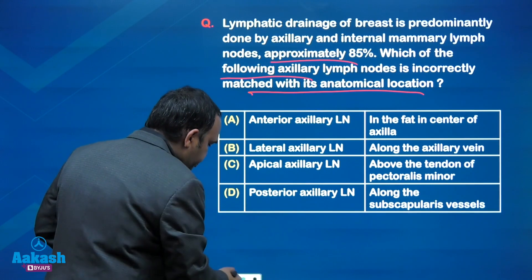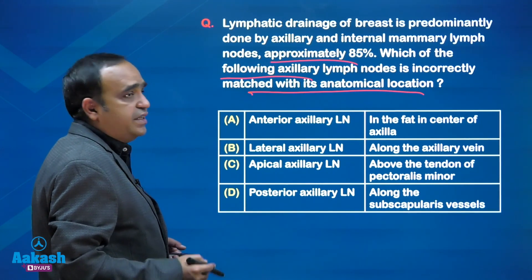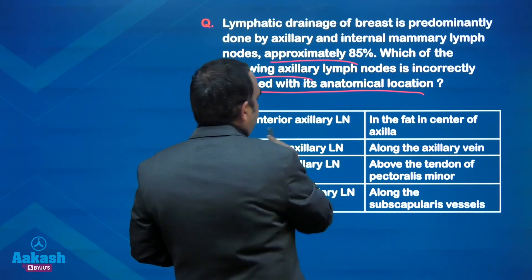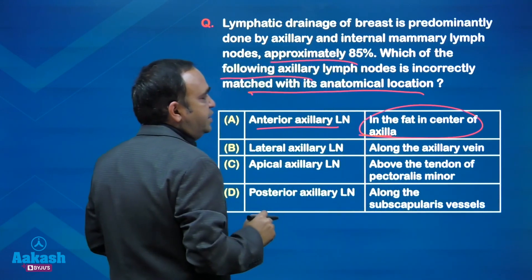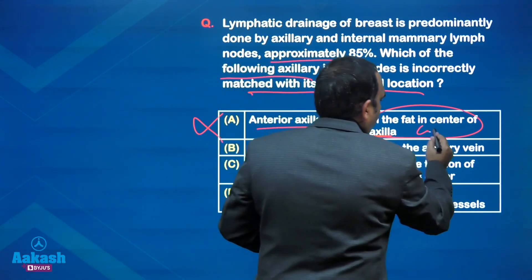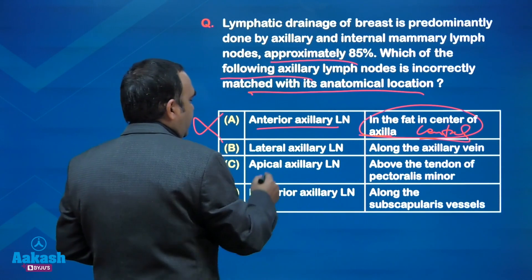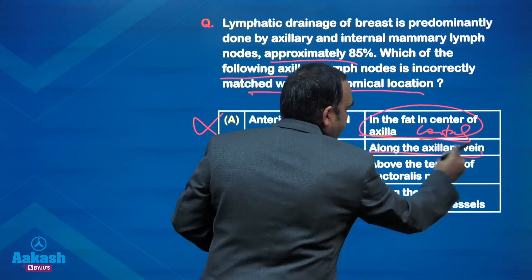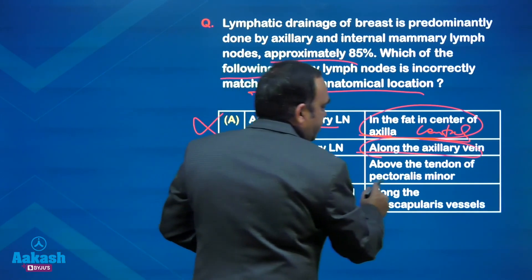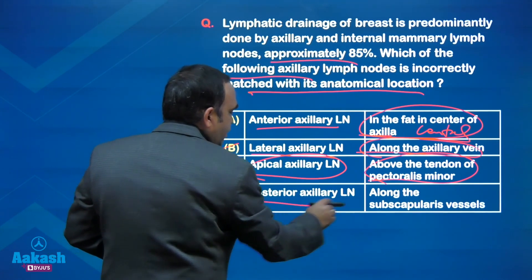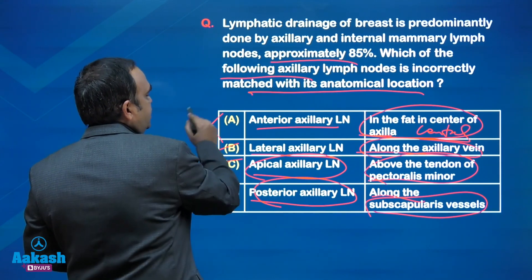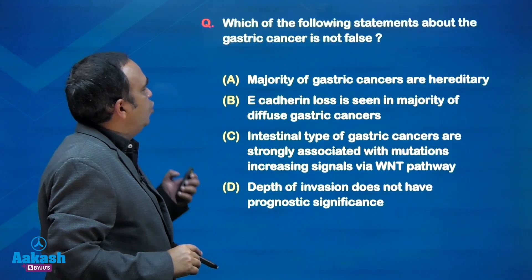Looking at the answer choices: anterior axillary was the pectoral group along pectoralis minor along the lateral thoracic - but here it is written 'in the fat in the center of axilla,' so the first choice itself is wrong. That is the central lymph node, not anterior. Central matched to brachial along the axillary vein - correctly matched. Apical lymph nodes above the tendon of pectoralis minor - correctly matched. Posterior subscapular along the subscapular vessels - correctly matched. So the answer is the incorrectly matched option.